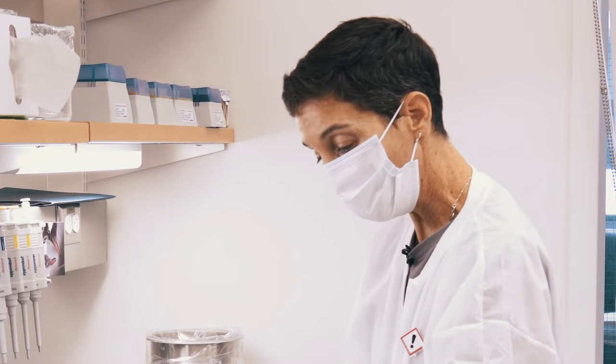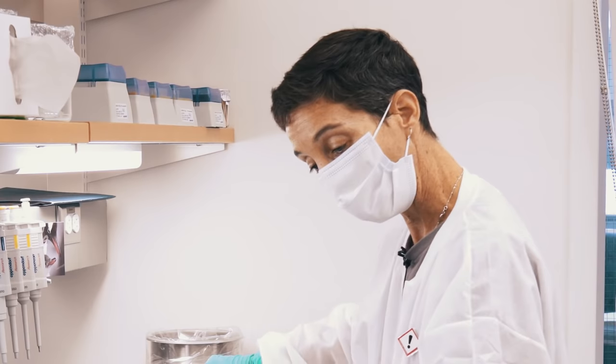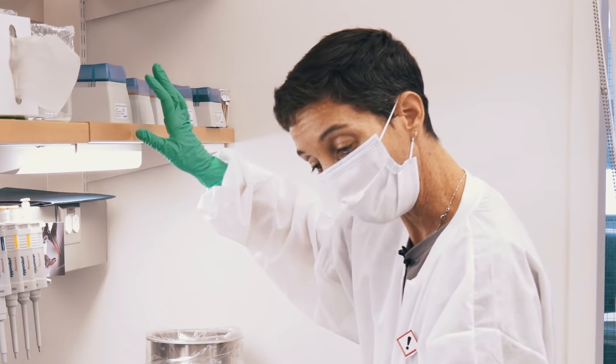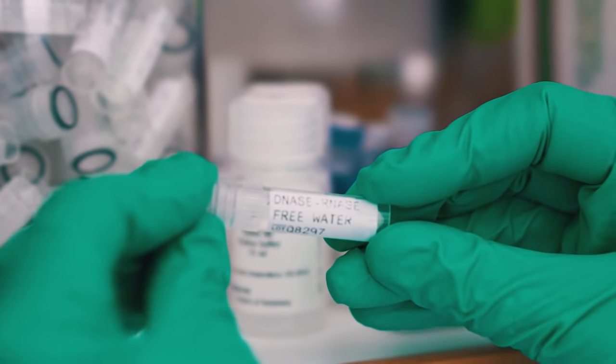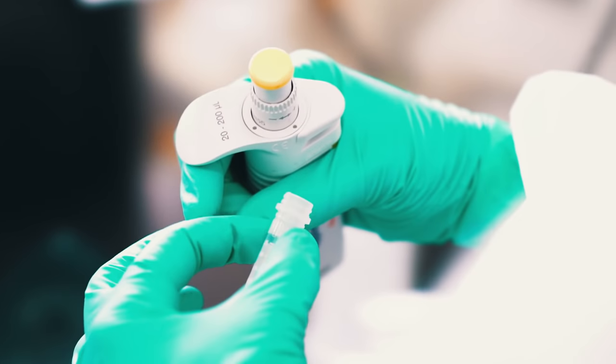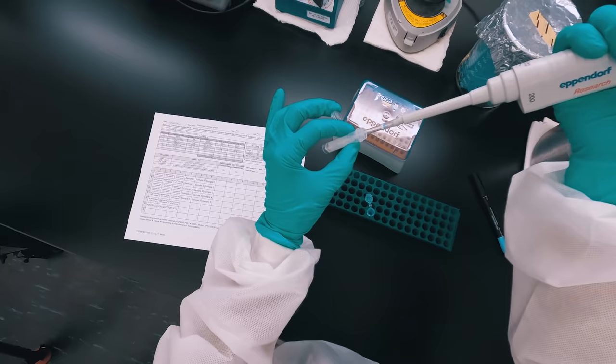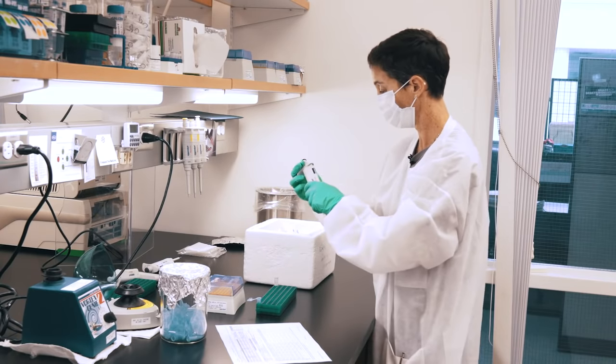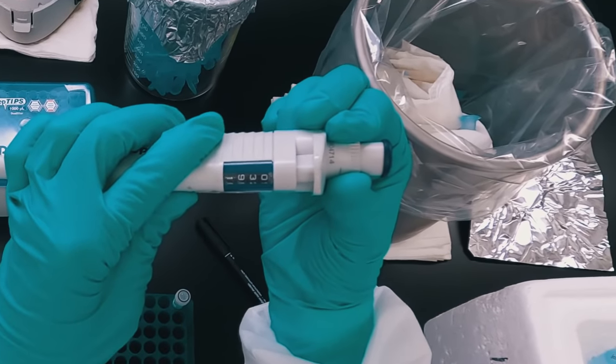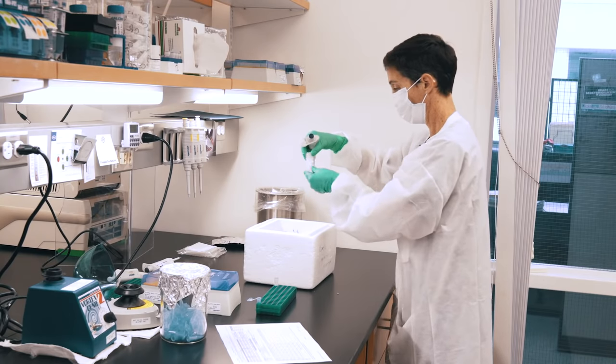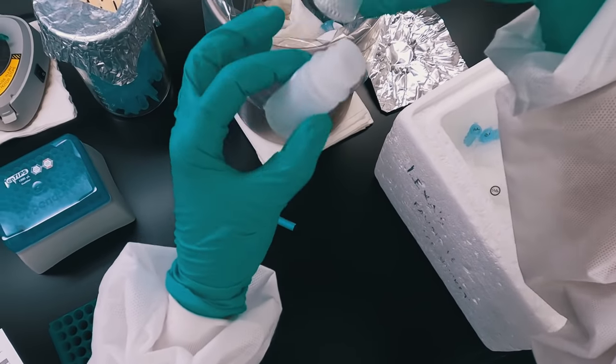So we just have five components of this master mix: the UDG, water, forward primer, reverse primer, and probe. So I will add those components in as calculated by the worksheet. We have DNase, RNase free water that we purchase and aliquot into small tubes to make sure that every time we use water it is nucleus free as well as DNA and RNA free. So you add the UDG super mix.